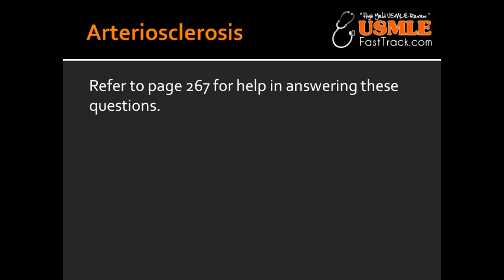What are the two types of Arteriosclerosis? The two types of Arteriosclerosis are hyaline and hyperplastic Arteriosclerosis. The hyaline type of Arteriosclerosis is when there is thickening of small arteries, and it happens in conditions such as essential hypertension or diabetes mellitus.